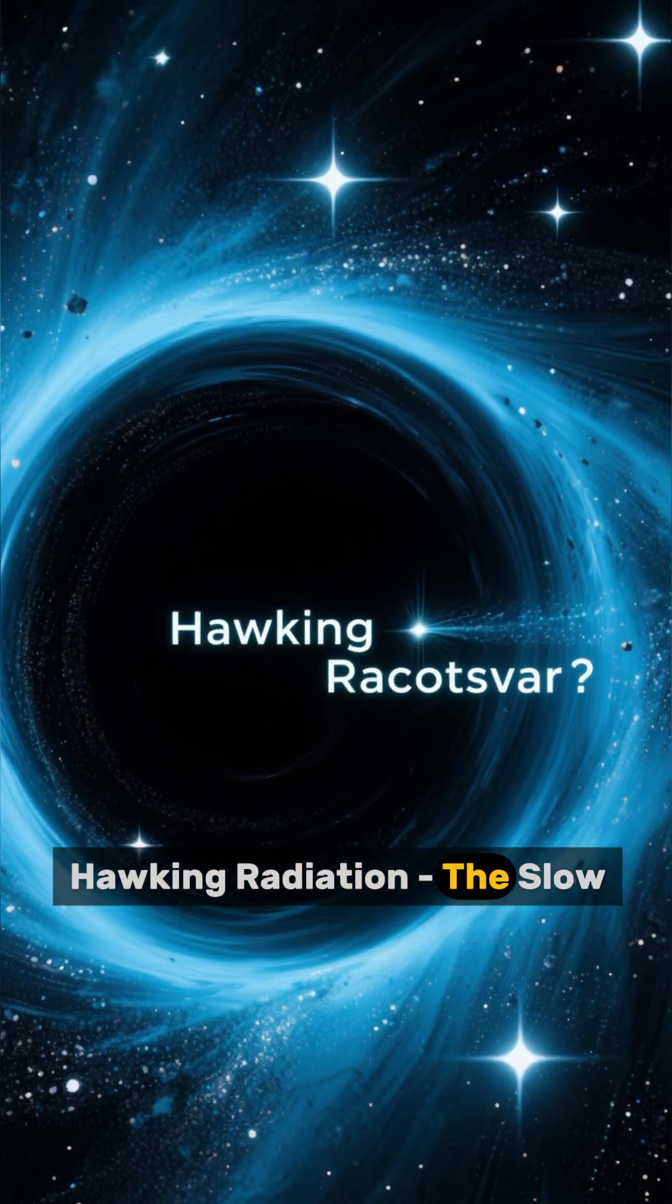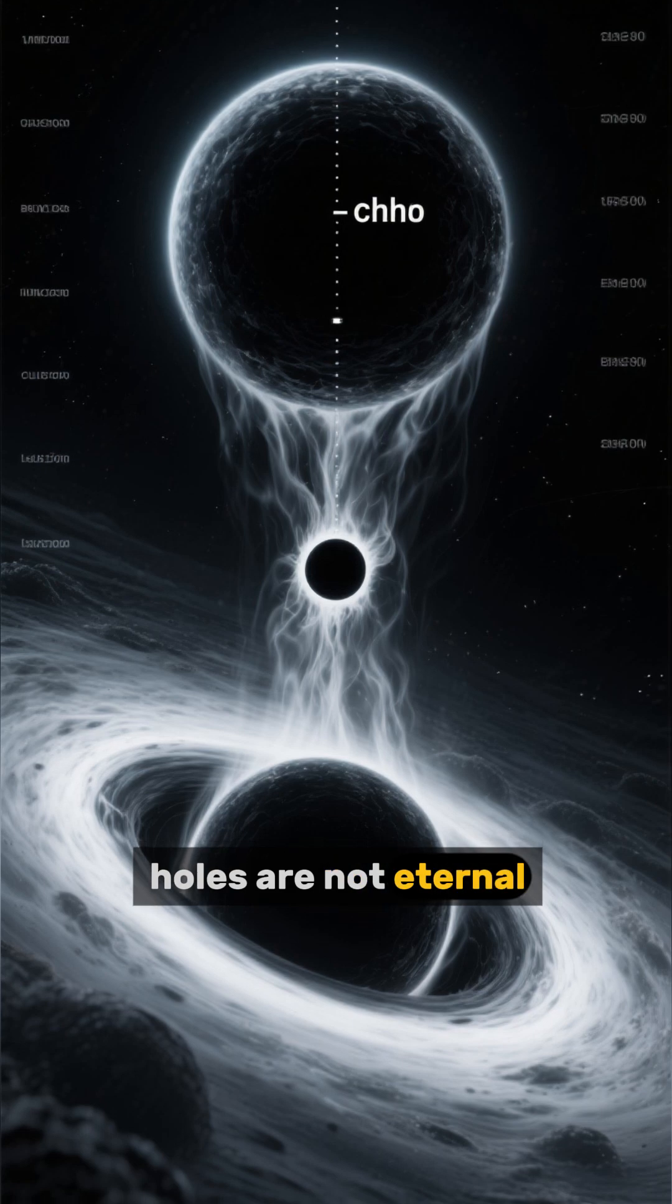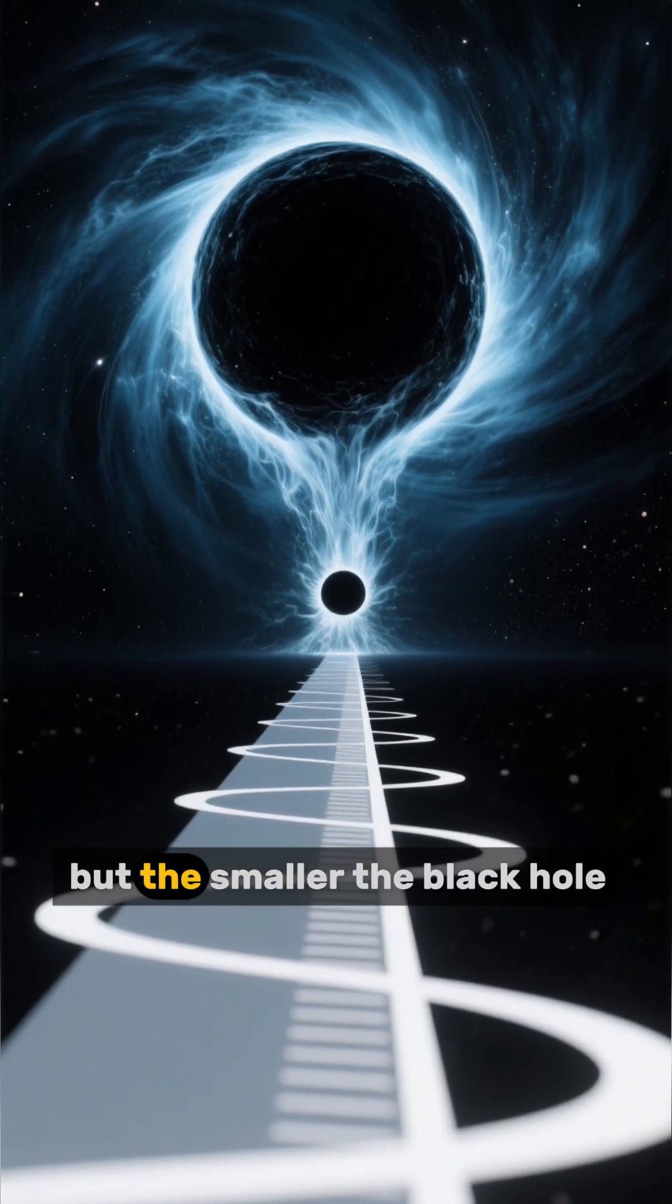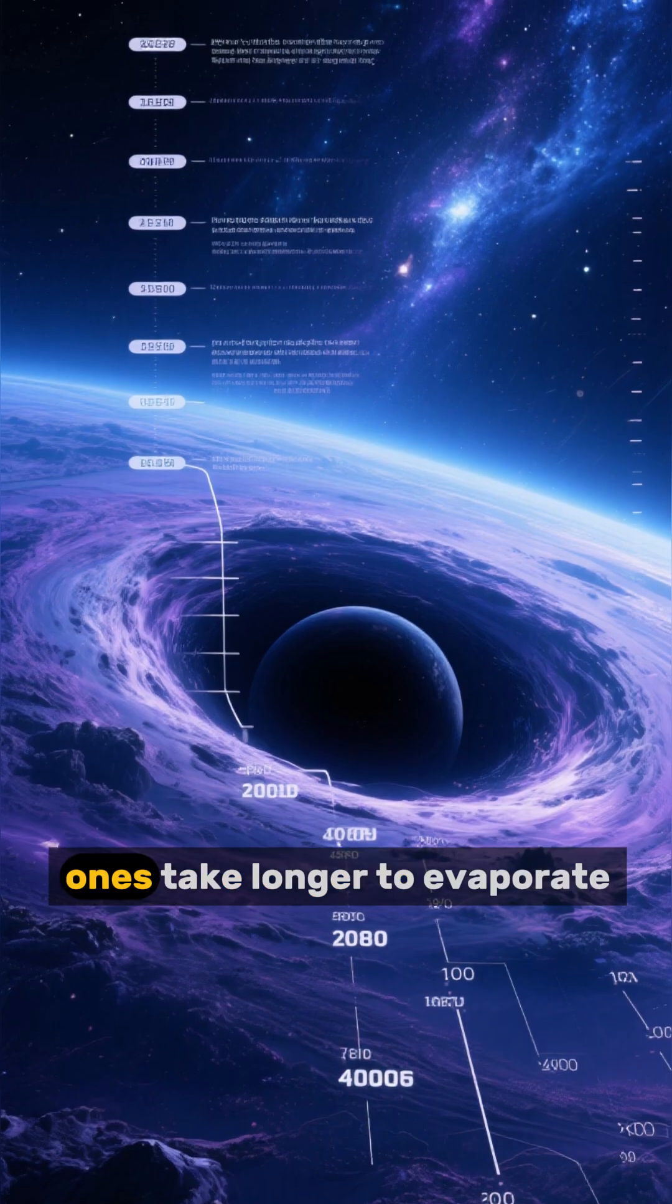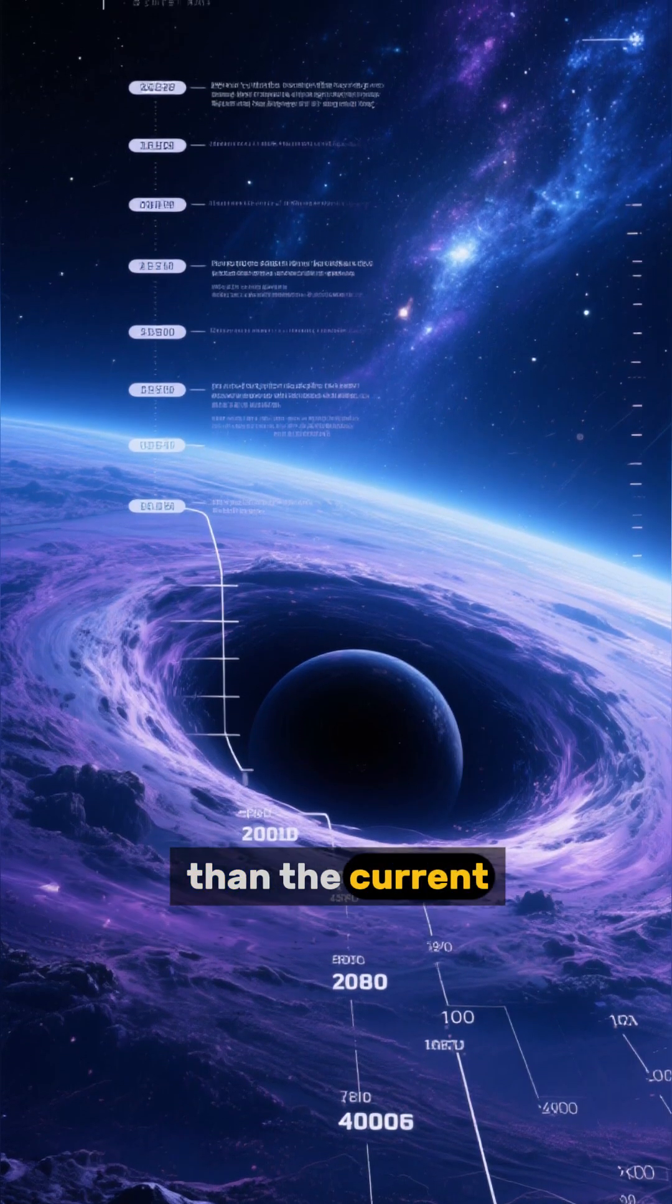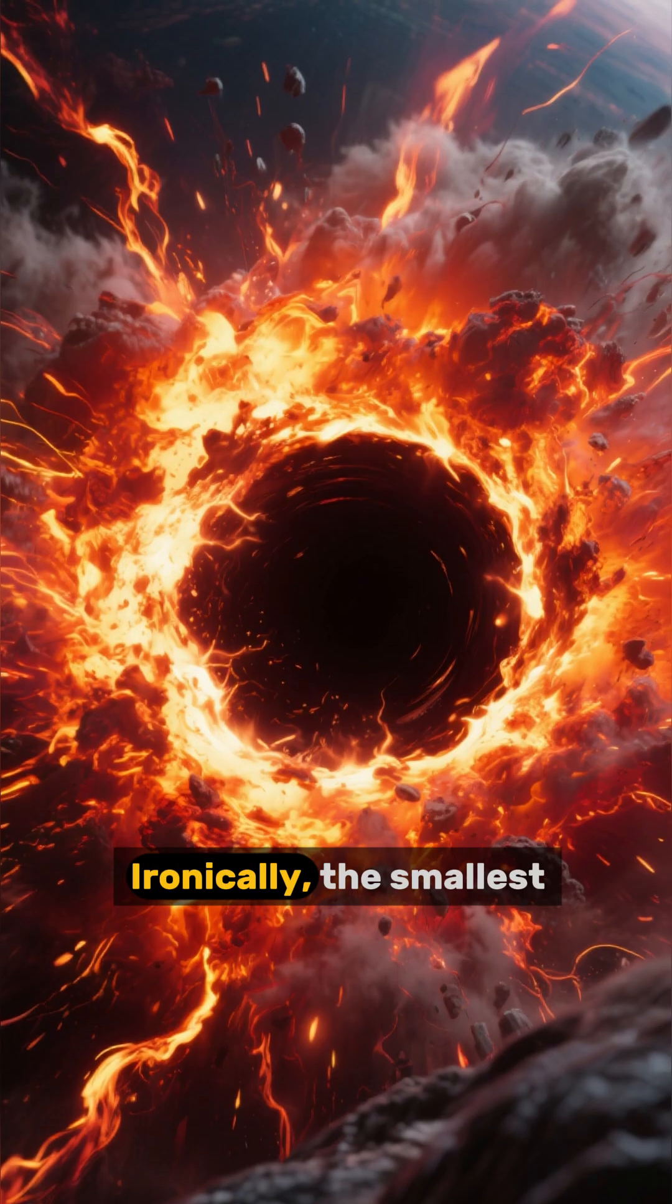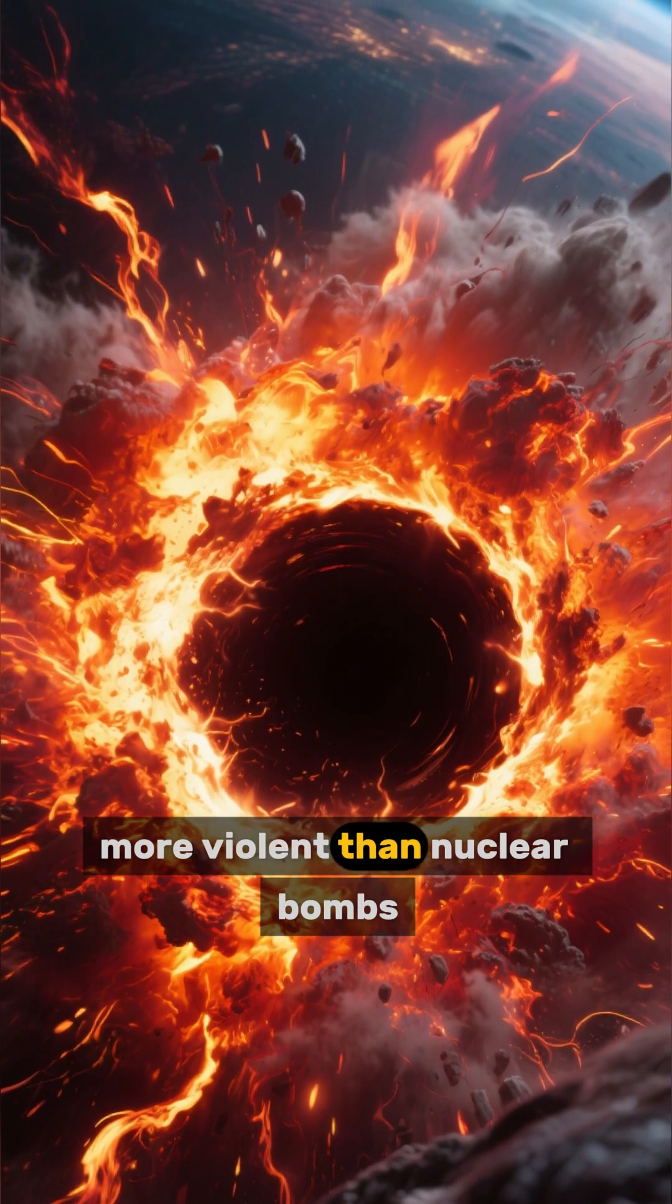Hawking radiation, the slow death of giants. Second fact: Black holes are not eternal. They slowly evaporate through Hawking radiation. But the smaller the black hole, the faster it dies. The largest ones take longer to evaporate than the current age of the universe—trillions upon trillions of years. Ironically, the smallest black holes die in explosions more violent than nuclear bombs.